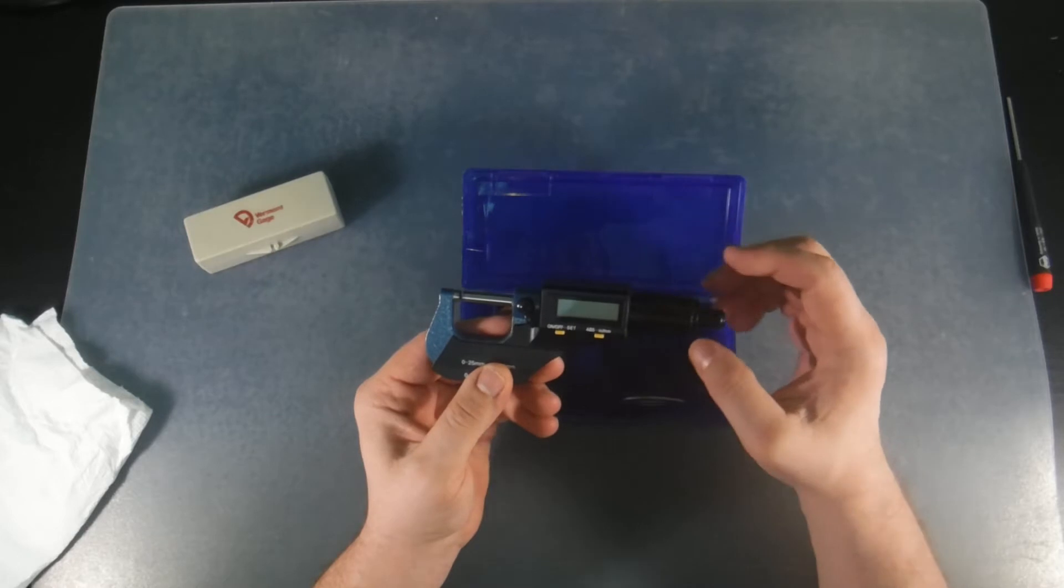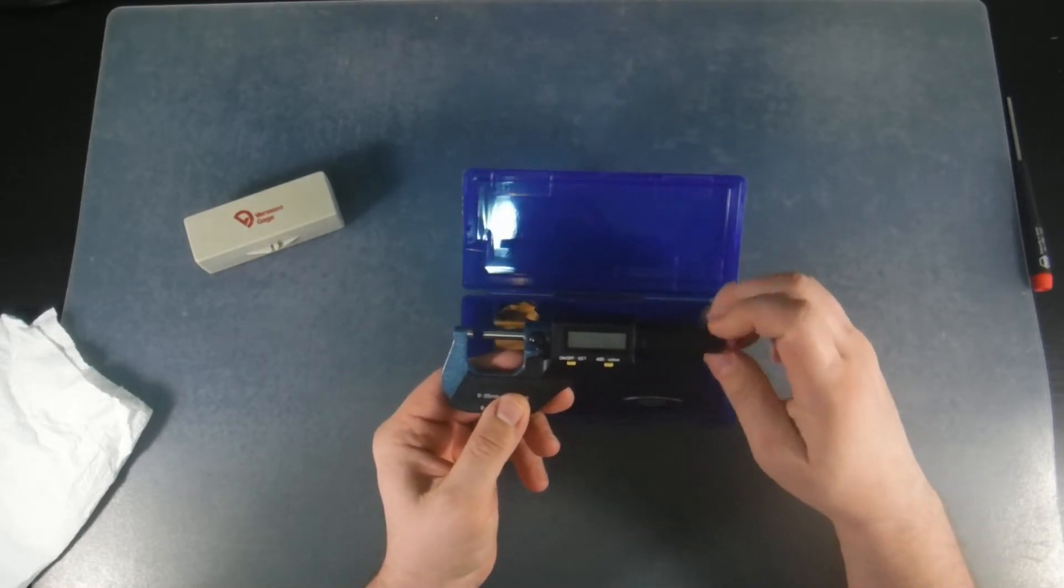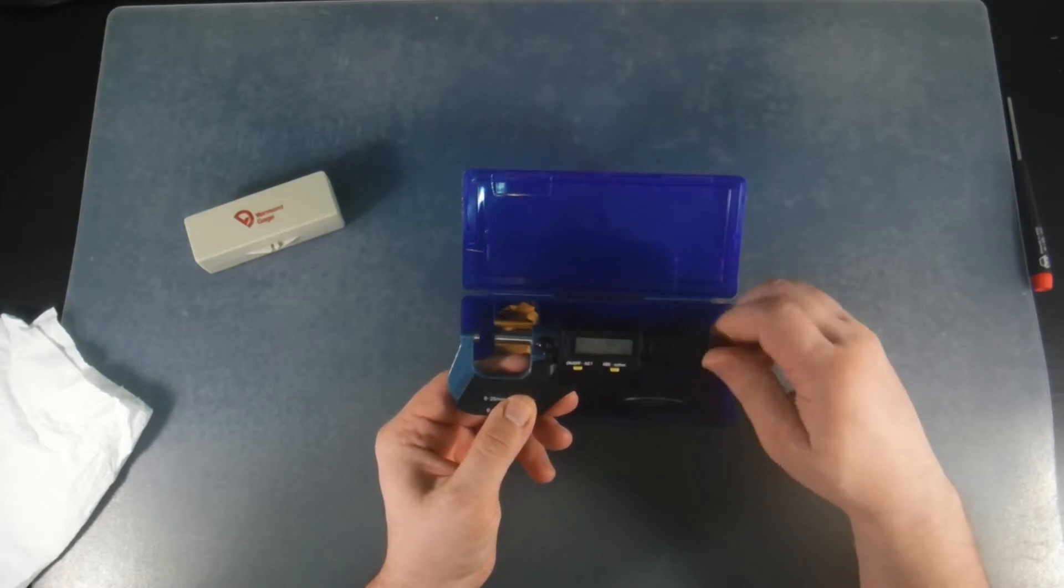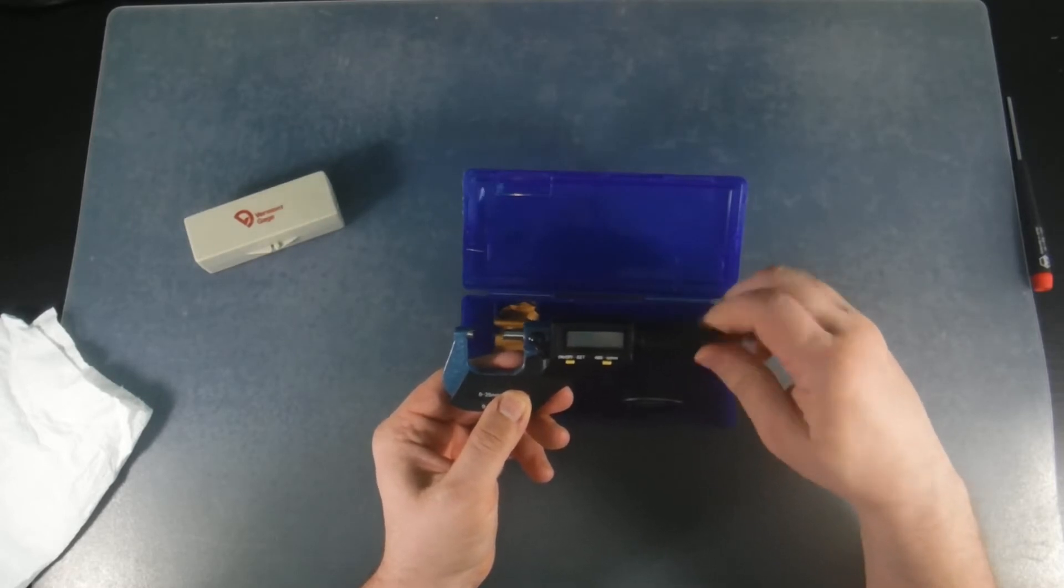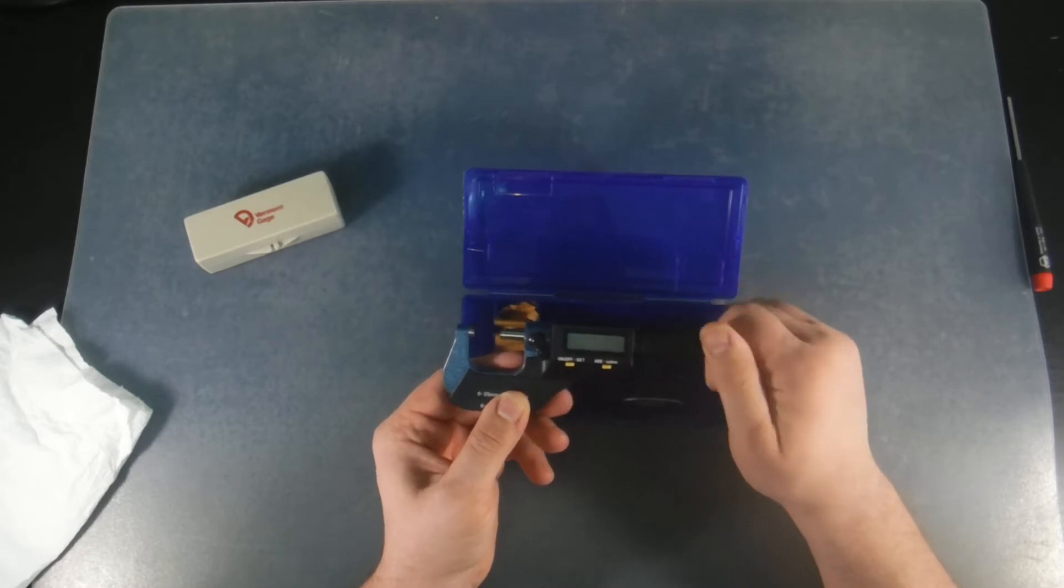This is the adjuster right here. One thing about this digital micrometer is that it takes a while to open and close the anvils, as you can see here. I'm going full speed with it. And then to close them up. So it does take a while.